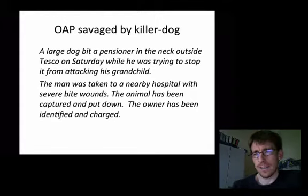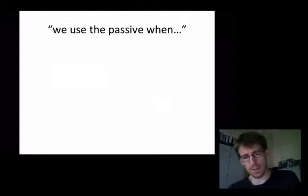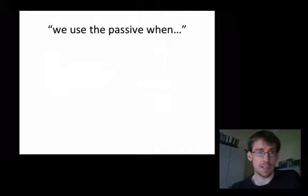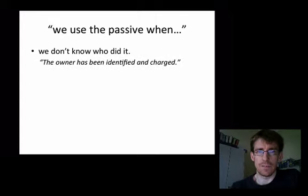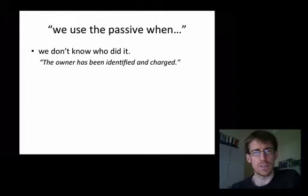Well, there are some classic explanations for this that I'd like to present and debunk. We often hear we use the passive when we don't know who did it. Somehow the agent is hidden from view. Well, if that's the case, the owner has been identified and charged makes no sense because we, of course, know who identified and charged the owner. It will be the police.